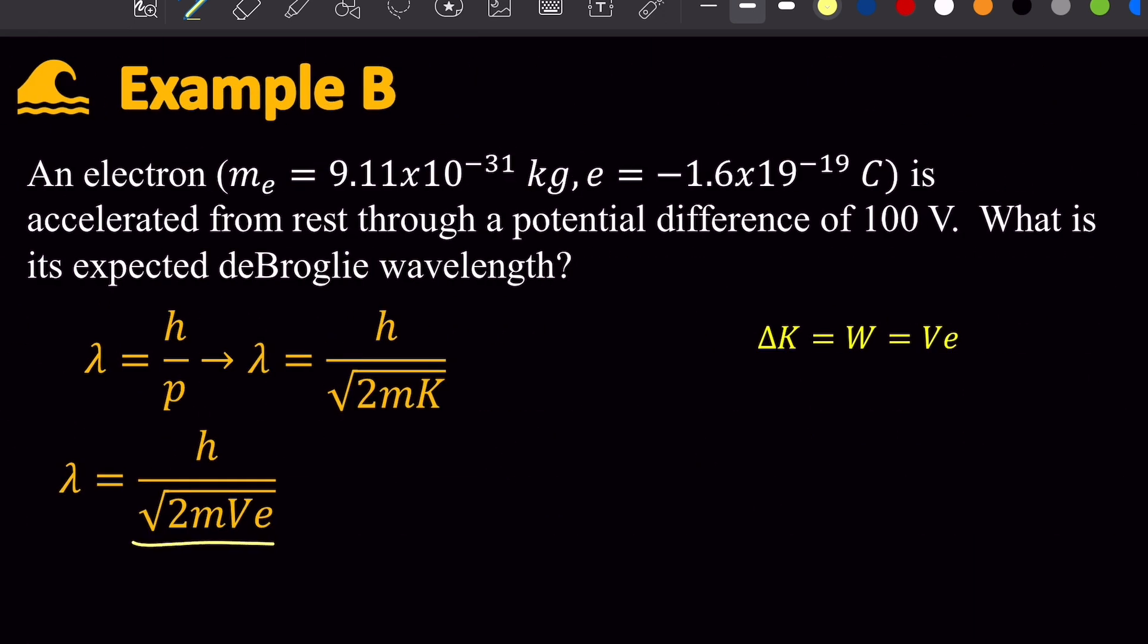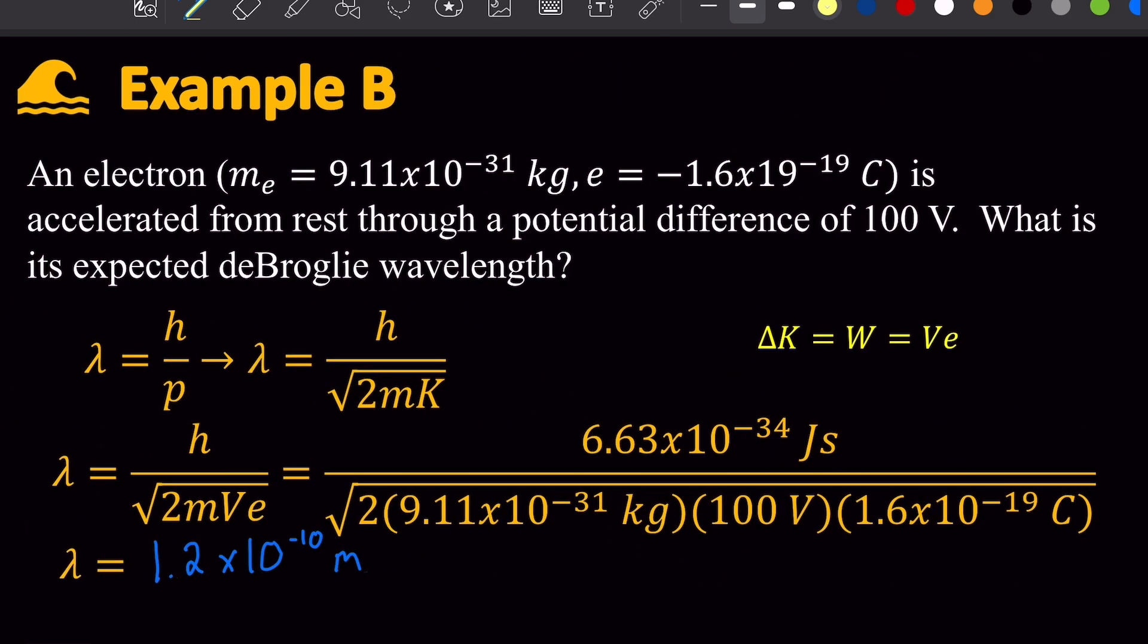So I get this expression here, and now to just plug in the given values for an electron and 100 volts. And the final answer here is 1.2 times 10 to the negative 10 meters.